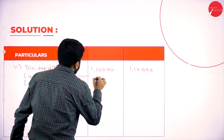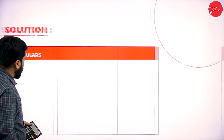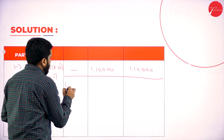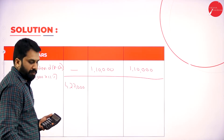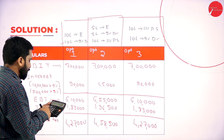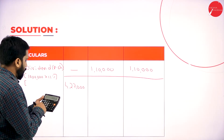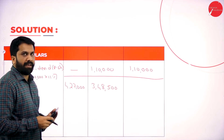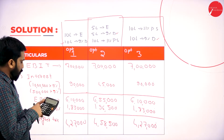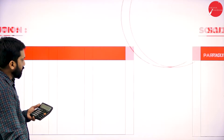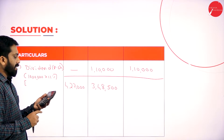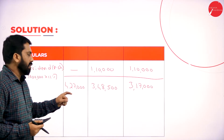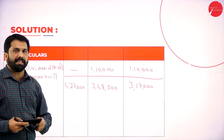So we have to minus this. For Option 1: 4 lakh 27,000 minus nil — it will remain 4 lakh 27,000. For Option 2: 4 lakh 58,500 minus 1 lakh 10,000 — it is 3 lakh 48,500. And the last one, Option 3: 4 lakh 27,000 minus 1 lakh 10,000 — we get 3 lakh 17,000. So the values are 4,27,000; 3,48,500; and 3,17,000.